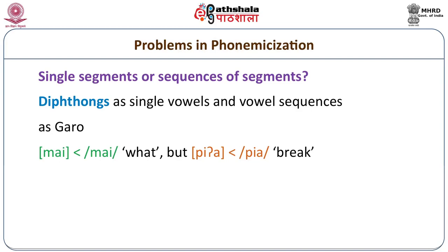But in a vowel sequence, a glottal stop is inserted. Thus, /mai/ means 'what,' but /tia/ means 'break.' In the word /mai/, /ai/ is a diphthong. But in the word 'break,' /ia/ is a sequence of two vowels. So Garo very clearly distinguishes between diphthongs and sequences of vowels.